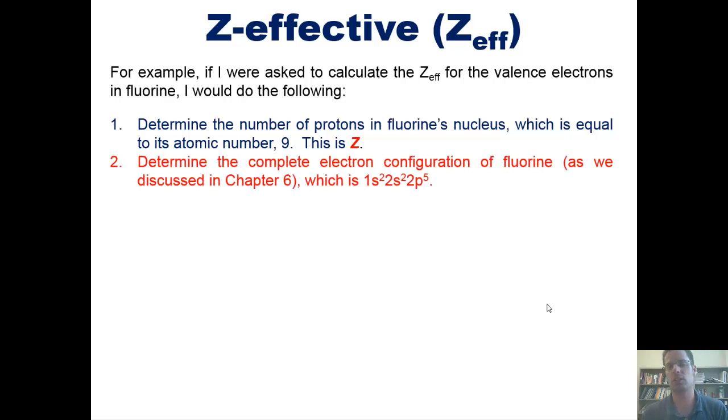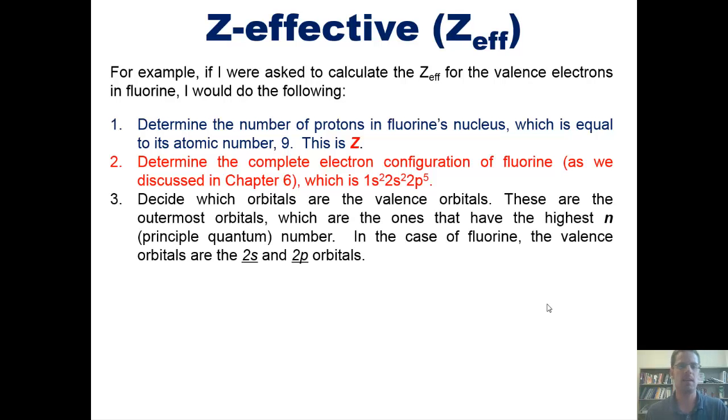Two, determine the complete electron configuration of fluorine, as we've discussed in Chapter 6. I'll post a link to that lecture right here. For fluorine, that electron configuration is 1s²2s²2p⁵. Three, decide which orbitals are the valence or outermost orbitals. Now, these outermost orbitals, the valence orbitals, are the ones that have the highest n or principal quantum number. In the case of fluorine, the valence orbitals are the 2s and 2p orbitals.